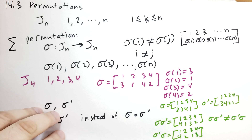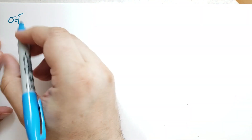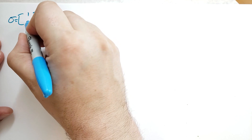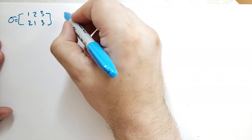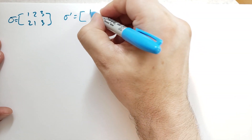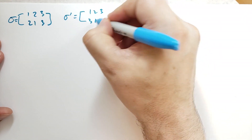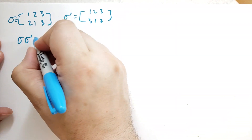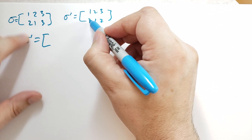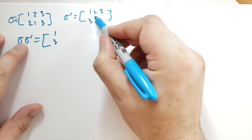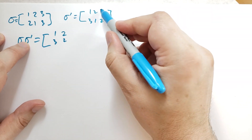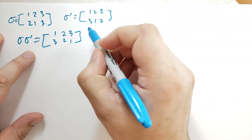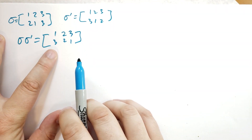Let's look at another example — hopefully you're starting to sense that something amazing is coming. Sigma maps [1, 2, 3] to [2, 1, 3], and sigma prime maps [1, 2, 3] to [3, 1, 2]. For sigma sigma-prime, we apply sigma prime first: 1 goes to 3, 3 goes to 3, so 1 goes to 3. Then 2 goes to 1, 1 goes to 2, so 2 goes to 2. Then 3 goes to 2, 2 goes to 1, so 3 goes to 1. Look at that — this is just reversing the order. That's pretty cool.